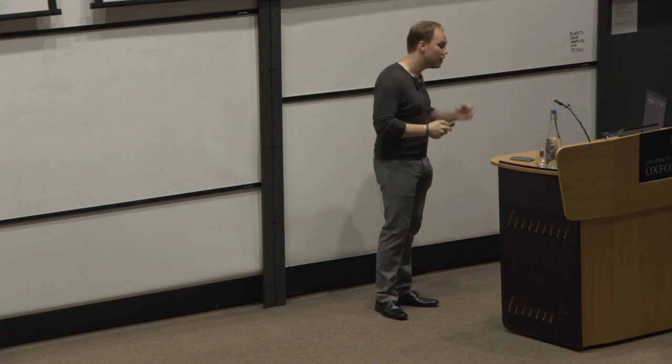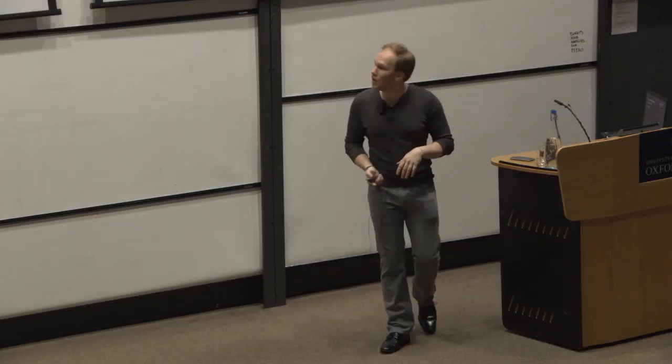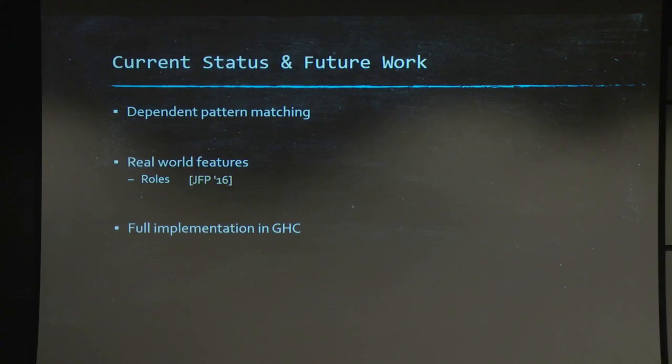Briefly, where are we right now? We're working on adding dependent pattern matching to the language so that we can fully support dependent data types. We're also working on some more real-world features like roles. It's a technical but important feature for GHC. And, of course, once we have that big theory fully mechanized, well, we need to implement this in GHC so that you guys can play around with it.